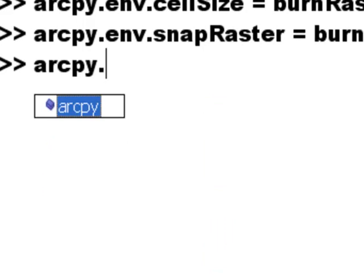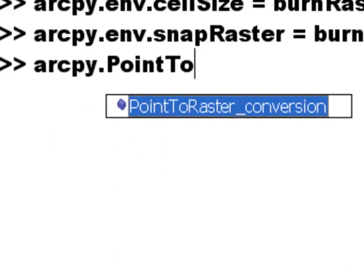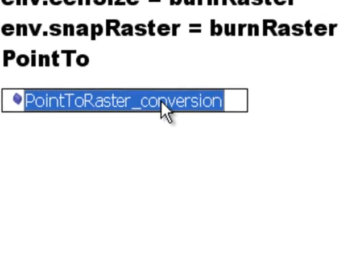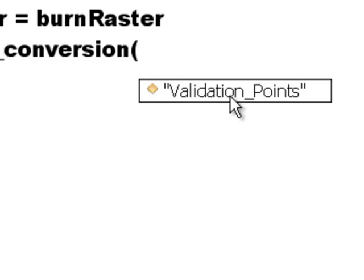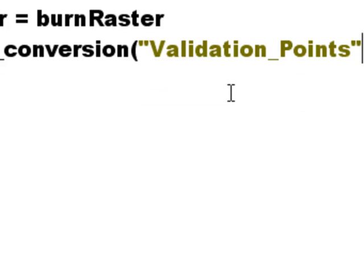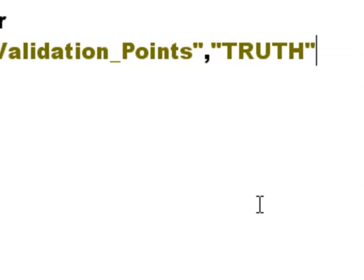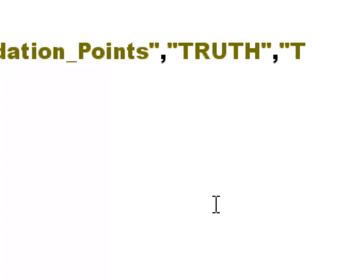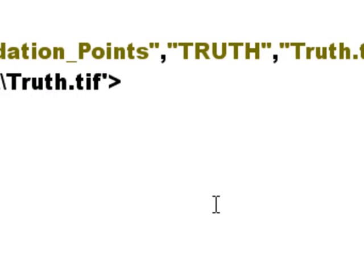Then we use arcpy.PointToRasterConversion, taking our validation points and using the value field for truth — ones and twos for unburned and burned — and output that to a raster called truth.tif. Now we've got a truth raster and we can look at it in ArcMap.